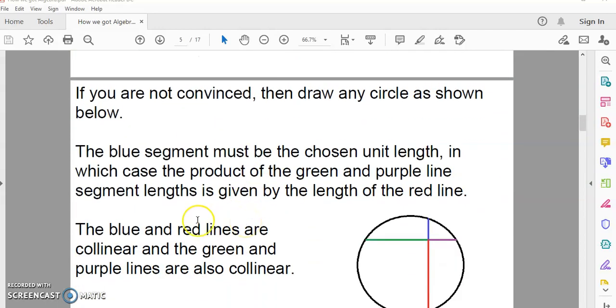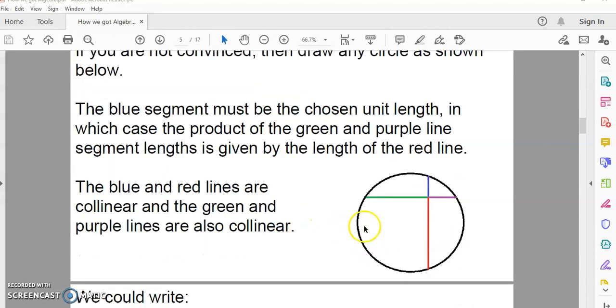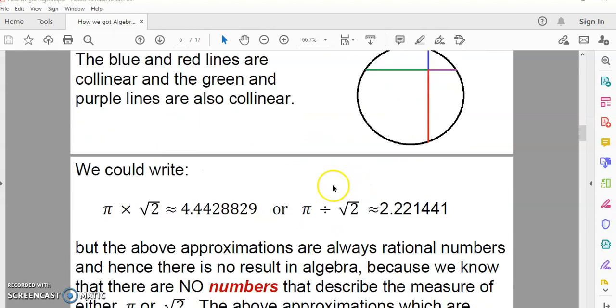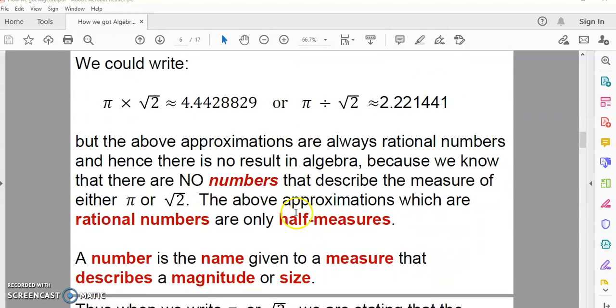Now, if you're not convinced, you can draw any circle as shown below, and I'm going to show you shortly how this works. You could write that pi times square root 2 is approximately equal to this, or its quotient is approximately equal to this. But these approximations are always rational numbers. So, there is no result in algebra, because we know that there are no numbers to describe either of the measures pi or square root 2. These approximations are rational numbers. And in actual fact, only half measures.